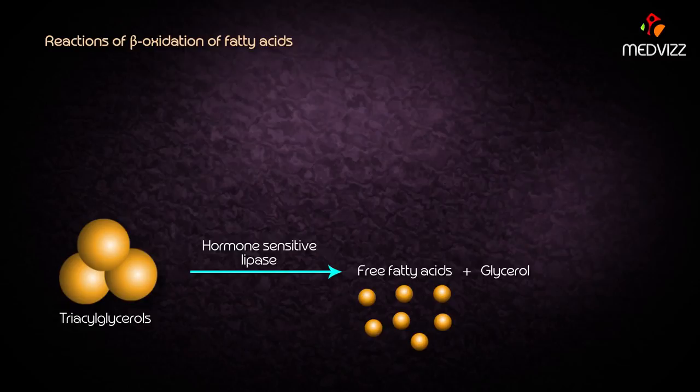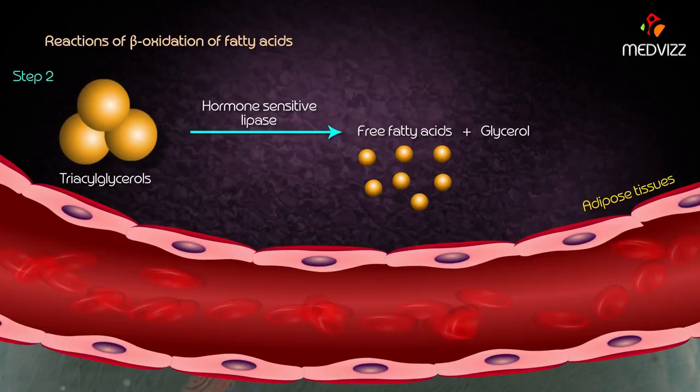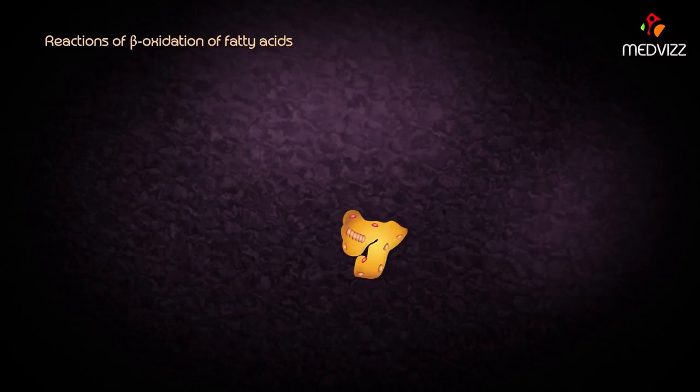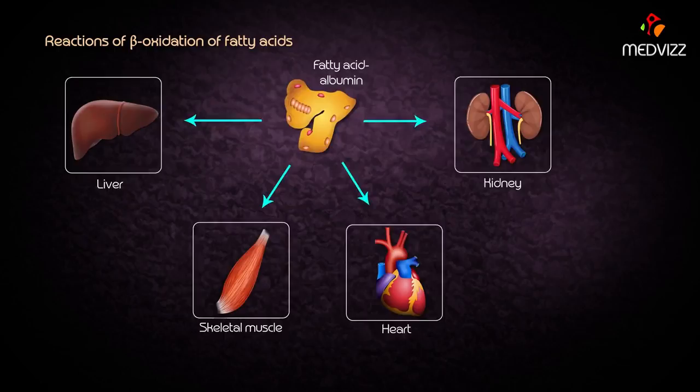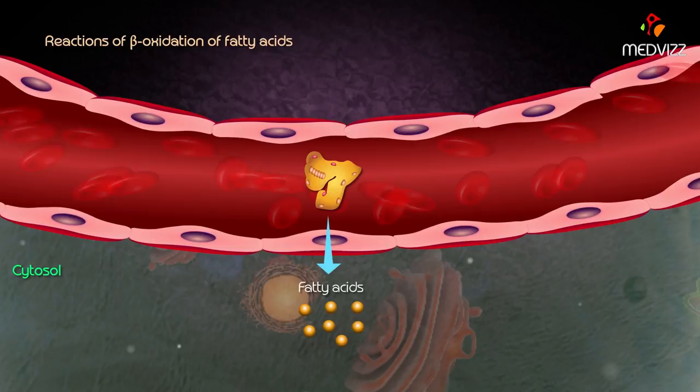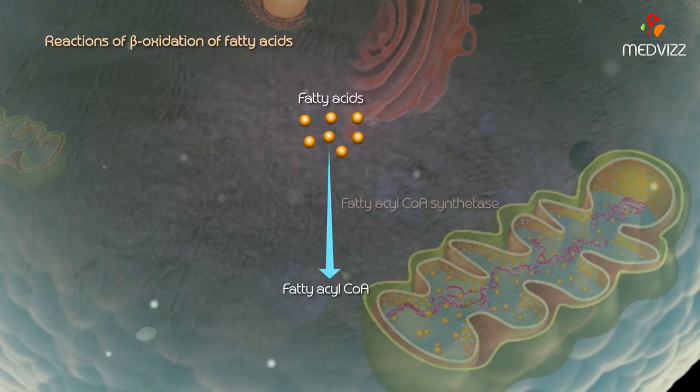In step 2, the free fatty acids released from the adipose tissue are carried in the bloodstream bound to serum albumin and delivered to all tissues such as liver, skeletal muscle, heart, and kidney, except for the brain and RBCs. The fatty acids dissociate from albumin and are transported into the cells.